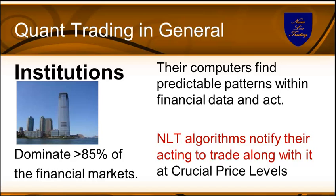Institutions — this is the key word — because 85% of all financial markets, reaching from stock markets to currency markets to commodities, are dominated by institutions. They use computers to find those predictable patterns within financial data and they act. With Nevelos Trading, we put together algorithms to find their acting, and then we act and trade along with the institutional price moves they engage in.